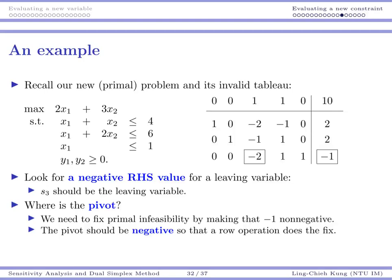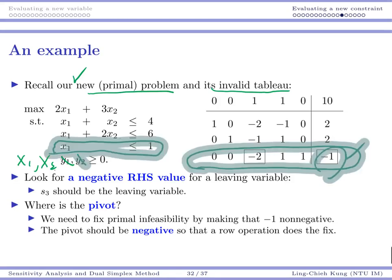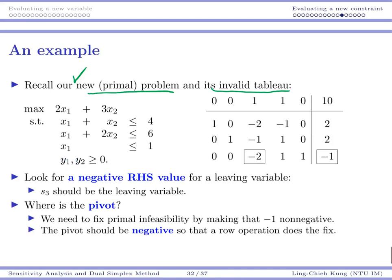Let's see an example of our new primal problem and these embedded tableaus. We have a new variable constraint—this should be x1, x2—and we have a new tableau with a new row and of course the new column for x5. This is the issue: the negative one here is something that we need to fix. According to the rule, we look at a negative right-hand side value.